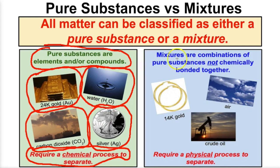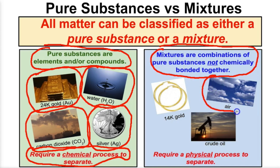What are mixtures? Mixtures are combinations of pure substances that are not chemically bonded together. For example, the air we're breathing right now is a mixture of nitrogen gas, oxygen gas, water vapor, and a bunch of other gases — elements and compounds that are just mixed together, not chemically bonded.